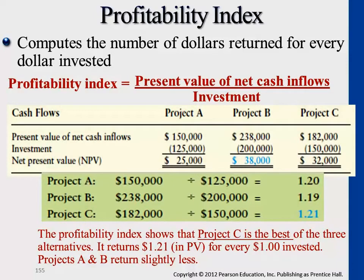In the previous example, both cases — the CD player and the DVR — had the same initial investment of one million dollars, so you could just compare the NPVs directly. But in this case, if the initial cost is different, you use the profitability index together with the NPV method to find the project with the highest index. That will be the one to suggest the company invest in.